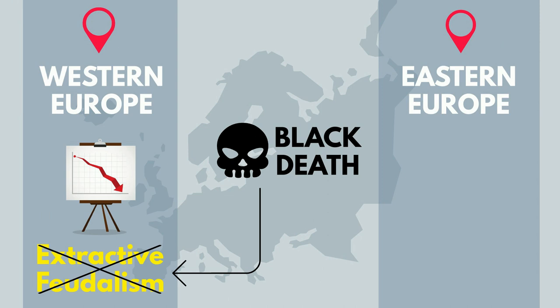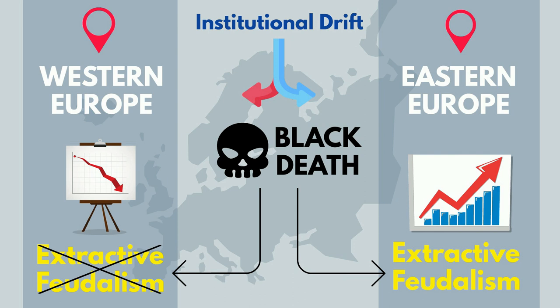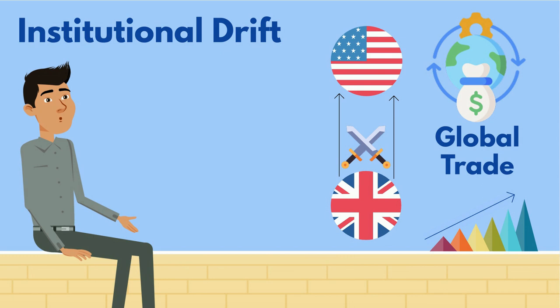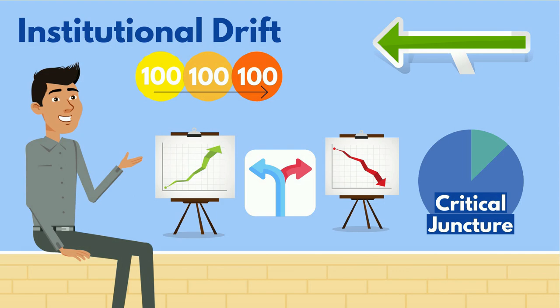Institutional drift is the result of this difference — it's where two similar regions grow in different directions. We saw a similar institutional drift when global trade expanded and the British colonized the Americas. Sometimes it takes centuries, but a small number of critical junctures can mean institutional drift that creates drastically different economic landscapes between once similar areas.